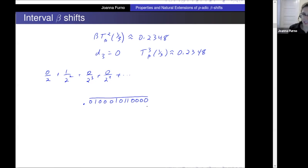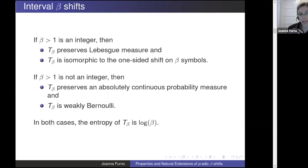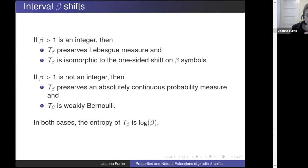So hopefully that was helpful in understanding what these transformations are, what they do to points, where we get expansions from, and what those expansions look like. Here are some properties — not formal definitions, just the ideas. We definitely have a break based on whether beta is an integer or not. When beta is an integer, you have slopes starting from the (0,0) corner and ending at the (1,1) corner, with as many branches as the size of your integer.